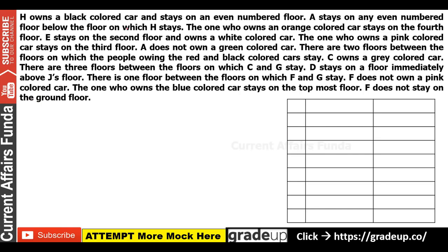Now we read the instructions. H owns a black color car and stays on an even number floor. So H has a black car and lives on an even-numbered floor — we'll note that. Next: A stays on any even number floor below the floor on which H stays. In prelims, as possibilities emerge, keep building them because statements will quickly cut possibilities.